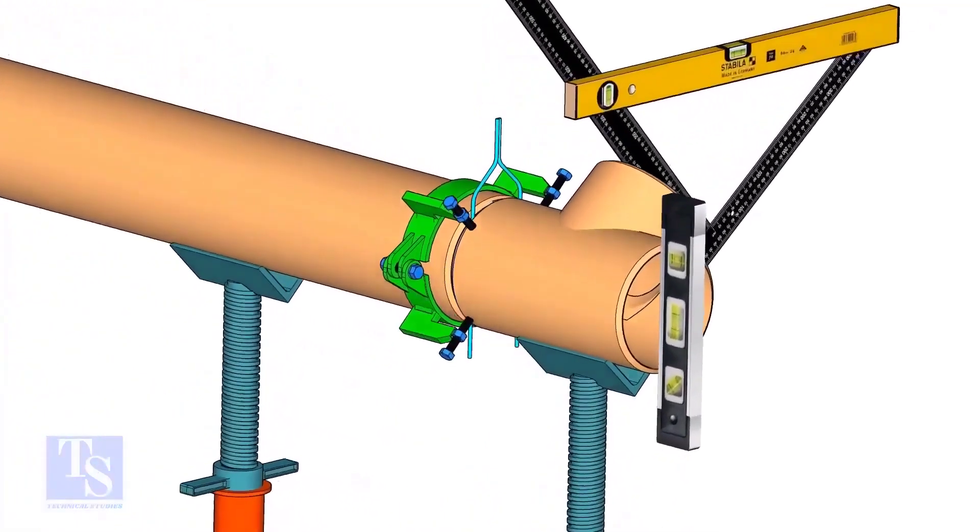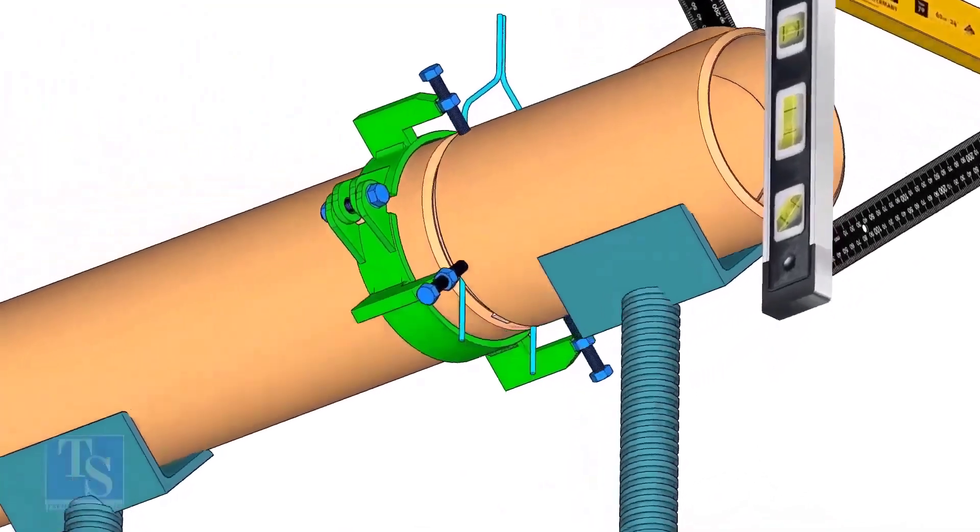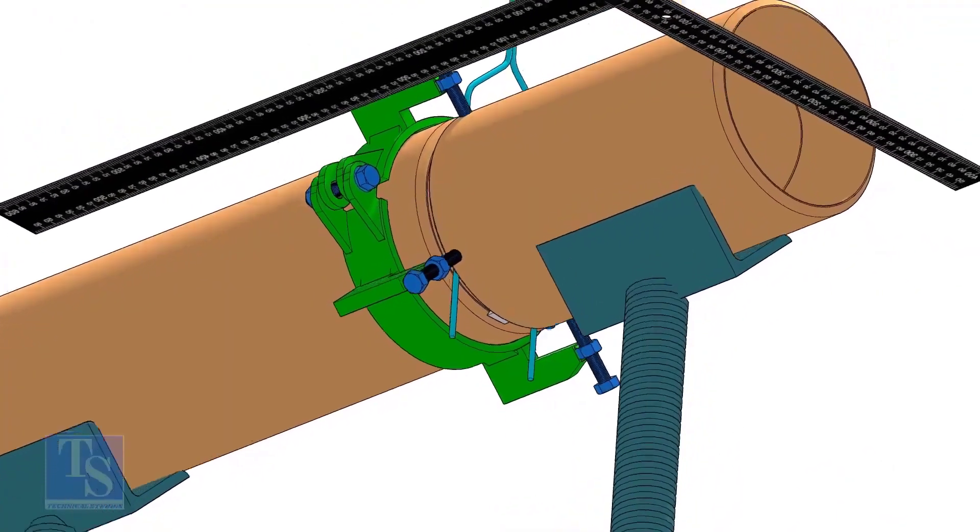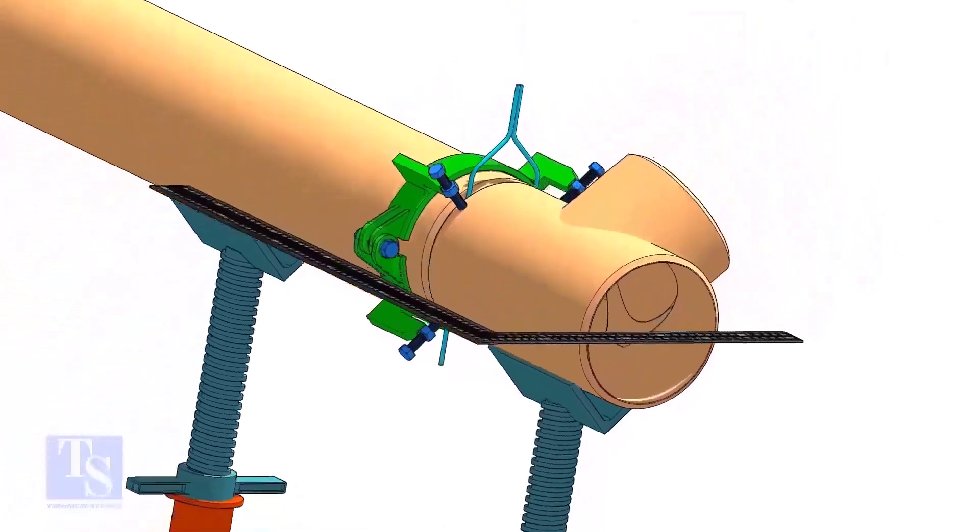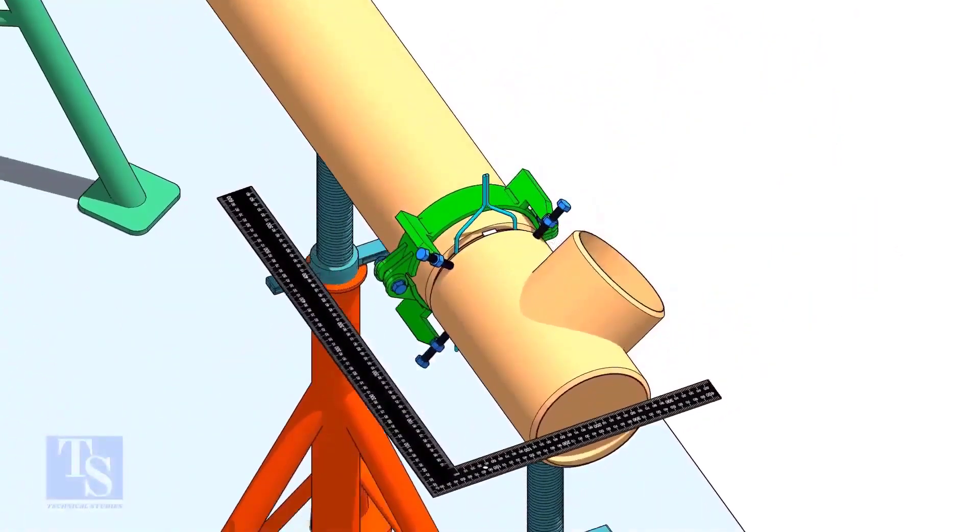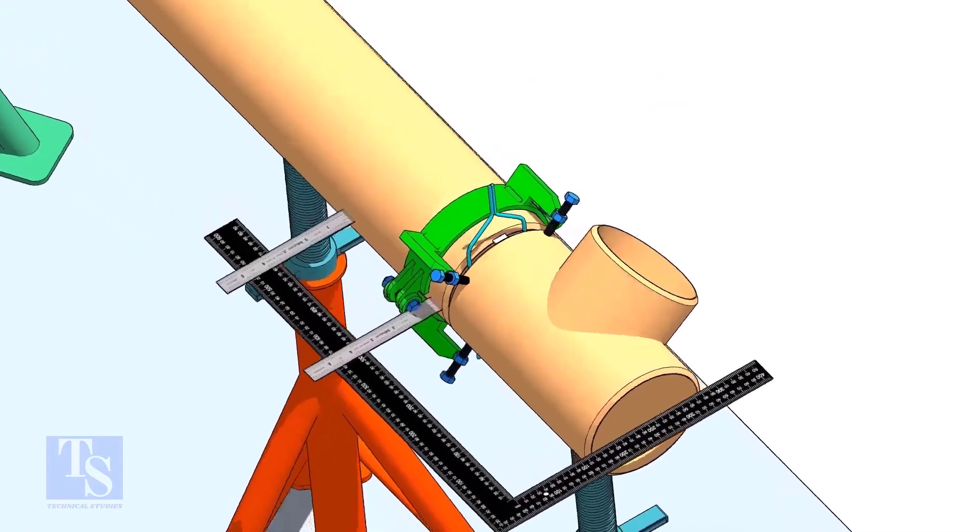TAC weld at the bottom side. Level the side of the T with the pipe, as shown.